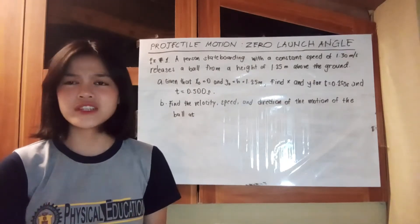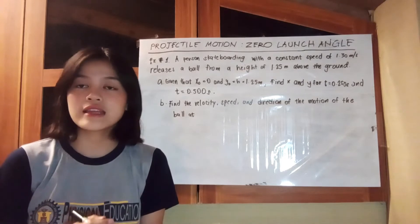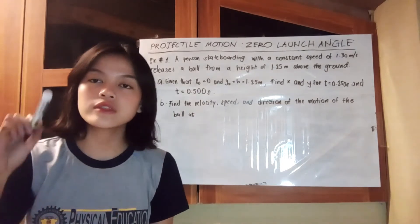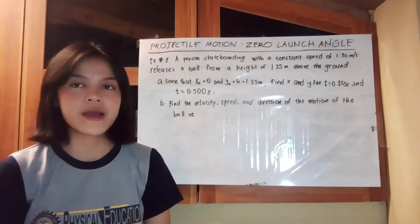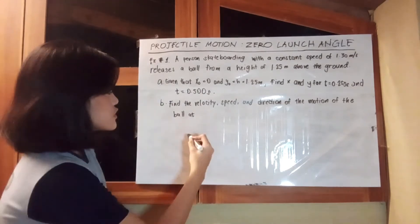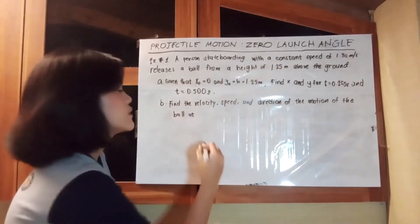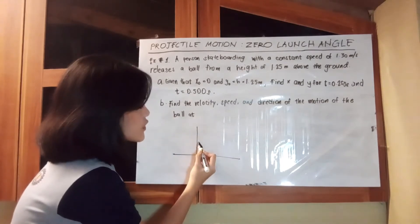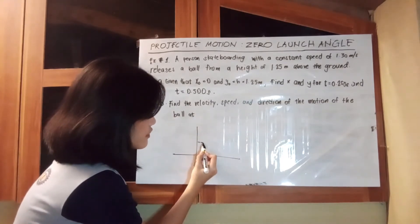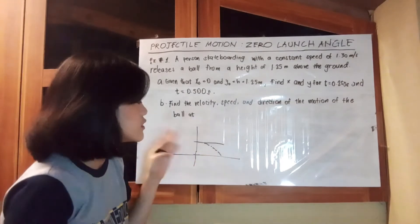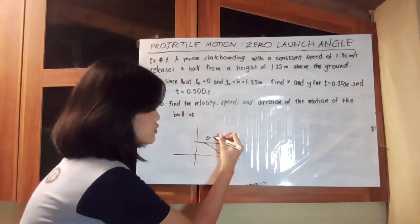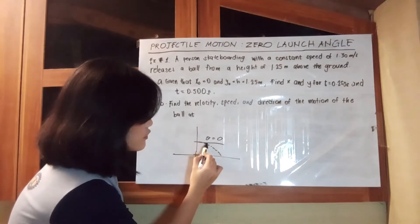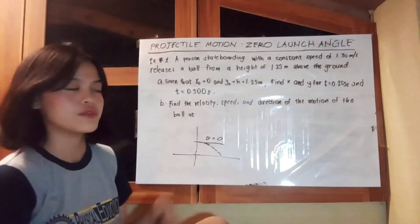Projectile motion is defined as the launch of anything — for example, a ball — that follows a certain path influenced by gravity. In zero launch angle, the launch is horizontal, meaning the angle is equivalent to zero, making a horizontal line for the release of an object.